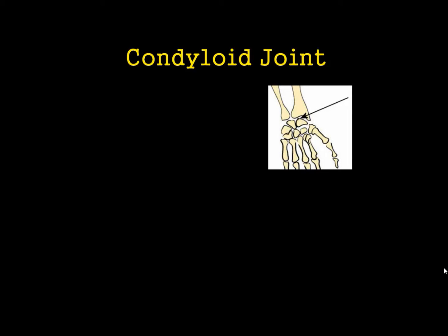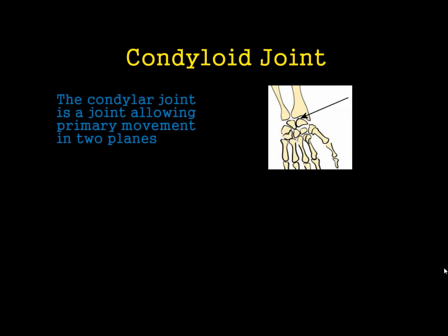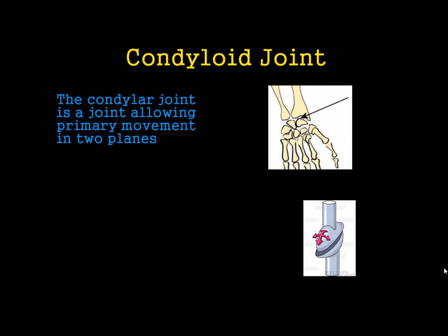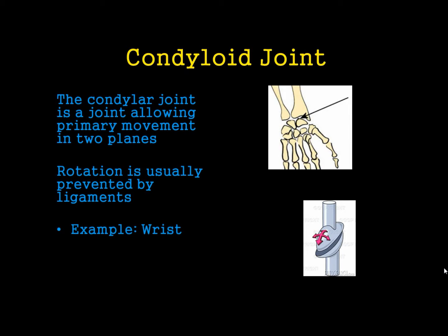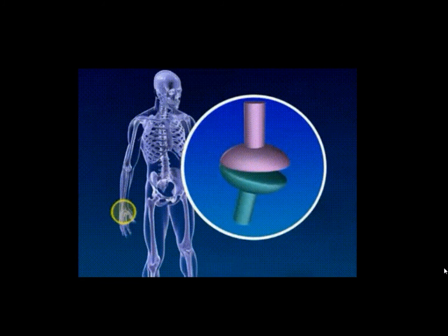We also have the condyloid joint, which can be found around a variety of different places. This is probably the most complicated joint — it has two surfaces but allows movement in two planes, sort of a forward and back and a side to side. Usually you're not able to rotate this joint because ligaments stop that. An example of this would be the wrist, and this is an example of a condyloid joint in 3D, allowing two different planes of movement.